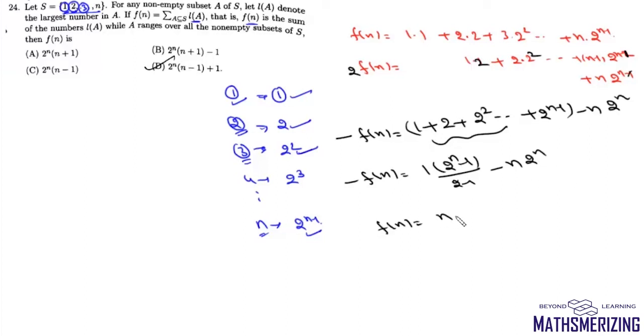We'll get F(N) = N×2^N - 2^N + 1. So it will be simply (N-1)×2^N + 1, and that's option D.